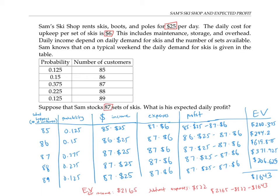I actually worked this problem out by putting this whole table into a spreadsheet. That makes it easy to adapt the problem in the case that Sam stocks a different number of sets of skis instead of 87, maybe 88 or 86.